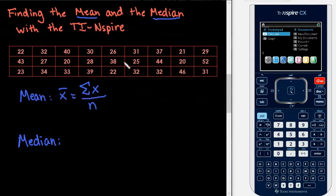If you remember, the mean is the sum of all of our terms divided by n, so our calculator will add all of these values and divide them by the number of terms. In this case, we have 27.